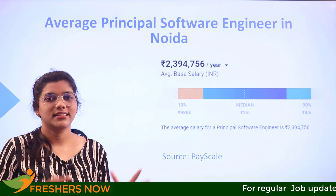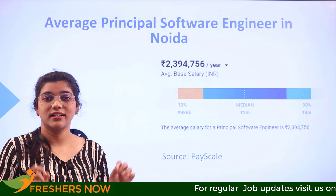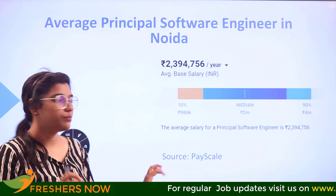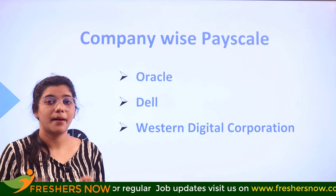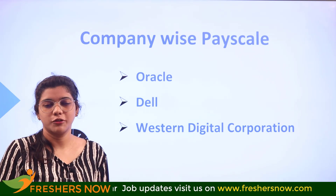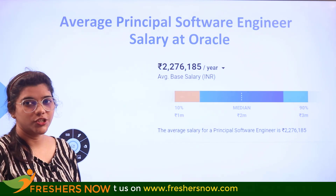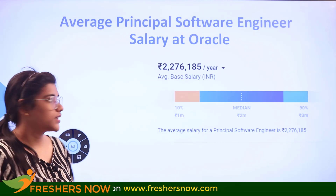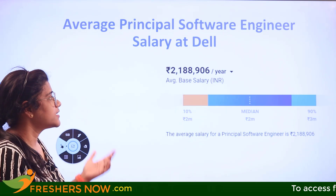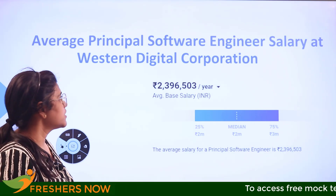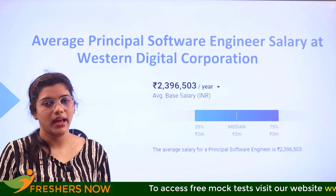You should also have a clear idea as to how major companies are paying their principal software engineers. The salary of a principal software engineer at Oracle is 22 lakhs per annum; at Dell it's 21 lakhs 88,000; and at Western Digital Corporation it's 23 lakhs 96,000 per annum.